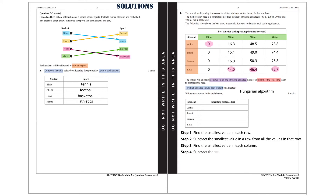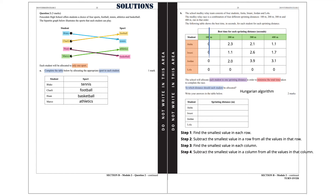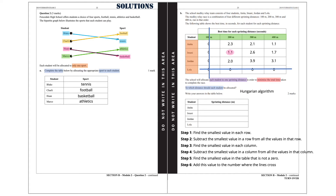Step 4: subtract the smallest value in a column from all the values in that column. This will give us these new values. We are going to draw horizontal and vertical lines to cover all the zeros. Step 5: find the smallest value in the table that is not a 0, and that is 1.1. Step 6: add this value to the number where the lines cross, and then subtract this value from all the uncovered values. This gives us the new values in the table.